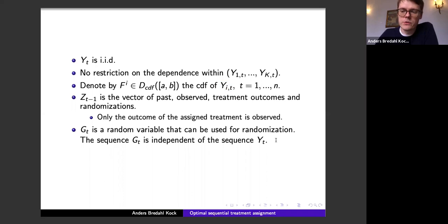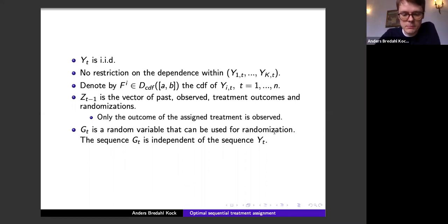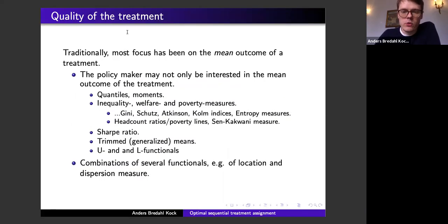G_t denotes a random variable used for randomizing treatment assignments — this is crucial for the framework to encompass randomized controlled trials where treatment assignment depends purely on a coin flip. Most focus in the literature has been given to targeting the mean outcome, but the policy maker may also be interested in the treatment with the highest 95th quantile, the lowest value at risk, higher moments, or inequality and welfare measures.